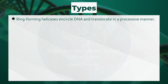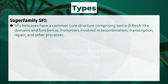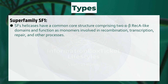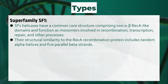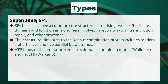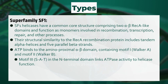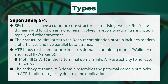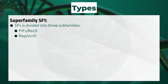Superfamily SF1: SF1 helicases have a common core structure comprising two alpha-beta RecA-like domains and function as monomers involved in recombination, transcription, repair, and other processes. Their structural similarity to the RecA recombination protein includes tandem alpha helices and five parallel beta strands. ATP binds to the amino-proximal alpha-beta domain containing motif 1 (walker A) and motif 2 (walker B). Motif 3 (SAT) in the N-terminal domain links ATPase activity to helicase function. The carboxy-terminal alpha-beta domain resembles the proximal domain but lacks an ATP binding site, likely due to gene duplication. SF1 is divided into three subfamilies: PF1/RecD, REP/UvrD, and UPF1-like.